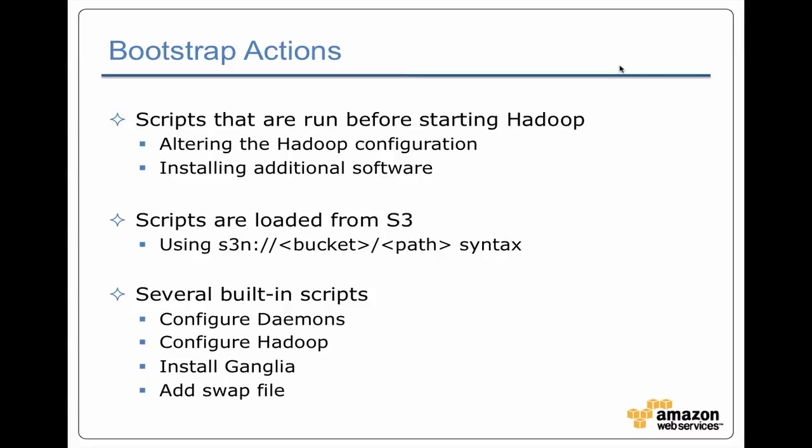So what are bootstrap actions? These are ways that you can adjust the configuration of the servers and the Hadoop installation when you're running Elastic MapReduce. Normally when you're using EC2, you have the ability to take an existing AMI, an image, and customize it, and then use that when you're starting up a single server or even a cluster of servers for Hadoop. With Elastic MapReduce, you've got a fixed AMI as well as a fixed Hadoop configuration, and sometimes you need to change that. The way you change it is with bootstrap actions.